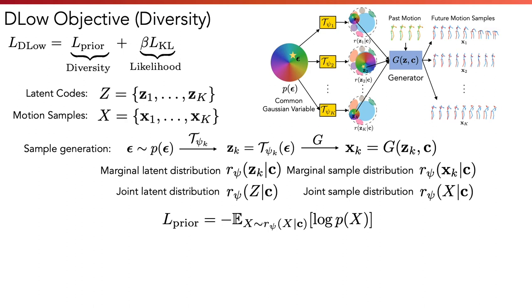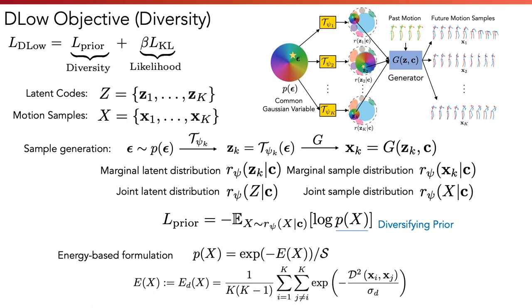The prior loss is defined as a cross-entropy between the joint sample distribution and a diversifying prior. The prior follows an energy-based formulation, and the energy penalizes small pairwise distance between samples. This objective can be easily approximated with Monte Carlo sampling.